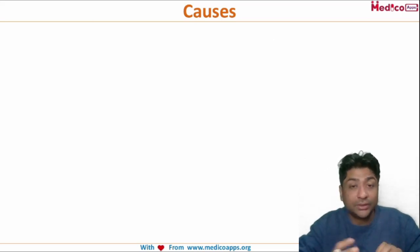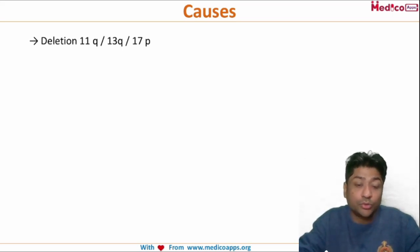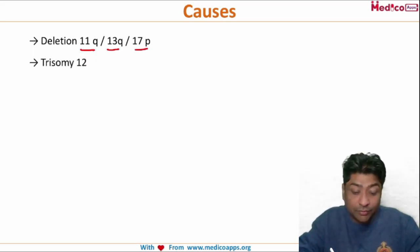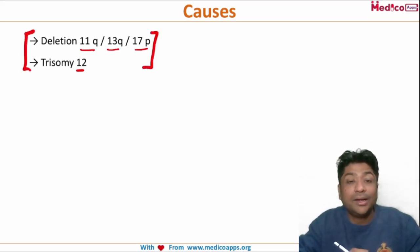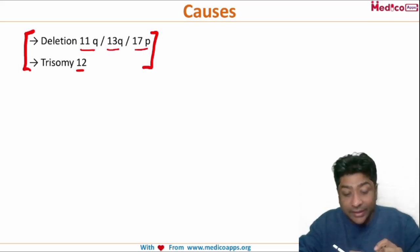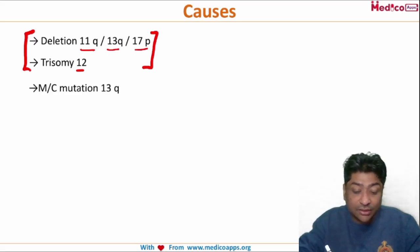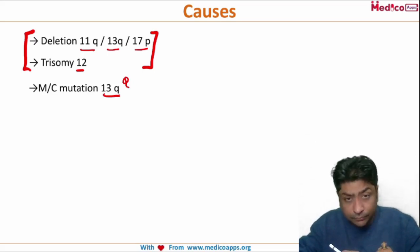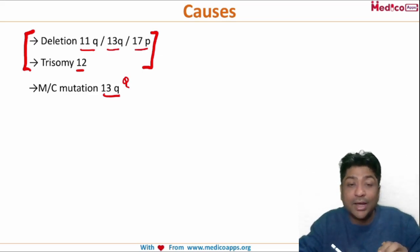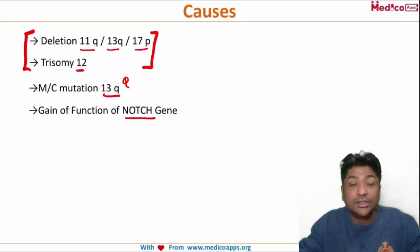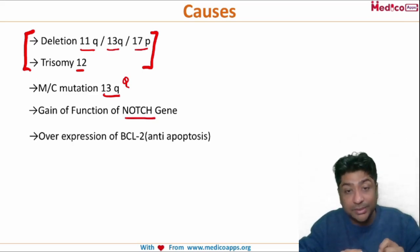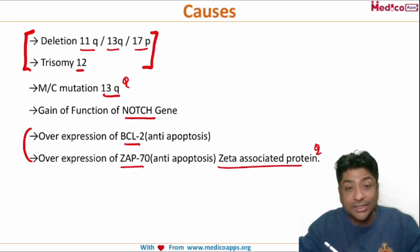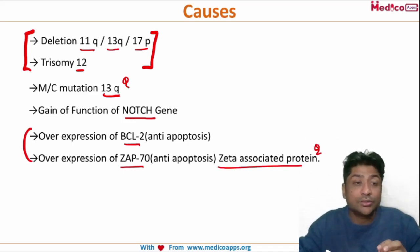These are very important exam questions regarding chromosomal abnormalities in CLL. The most common chromosomal abnormalities are deletions of 11q, 13q, and 17q, and there is also trisomy 12. The most common of these is 13q deletion. Other important abnormalities include gain of function of the NOTCH gene, and overexpression of two anti-apoptotic genes: BCL2 and ZAP70 (Zeta Associated Protein), both found to be overexpressed in CLL.